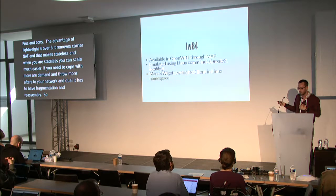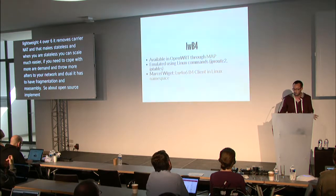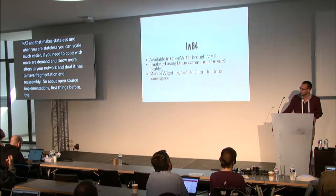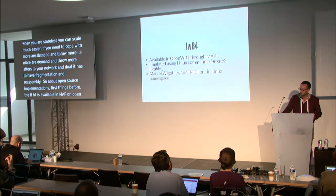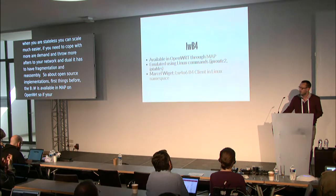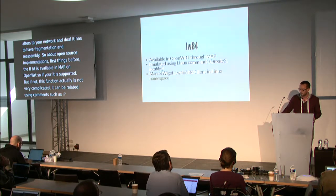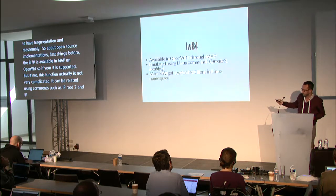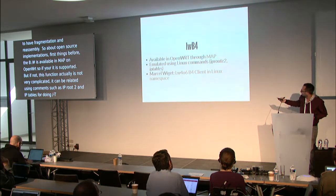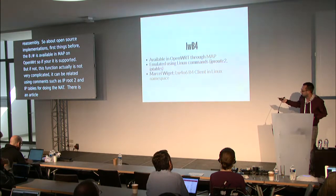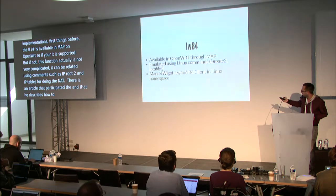About open source implementations — first, the B4. The B4 is available in a program called MAP on OpenWrt. If your CPEs are running OpenWrt, it is supported. If not, this function is not very complicated and can be emulated using commands such as 'ip route' for creating tunneling and 'iptables' for doing the NAT. There is an article by Marcel Wiggett, a Juniper engineer who participated in the deployment at OTE, describing how to implement B4 using Linux commands.